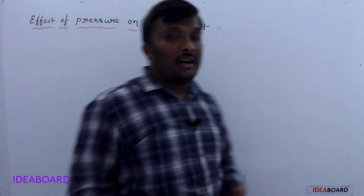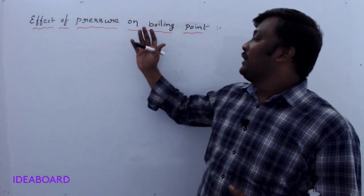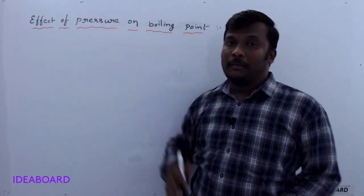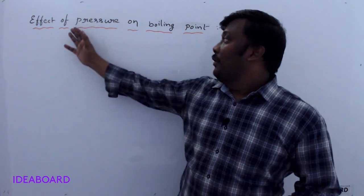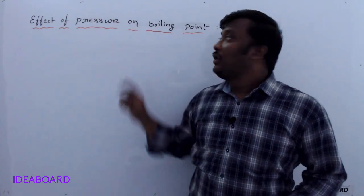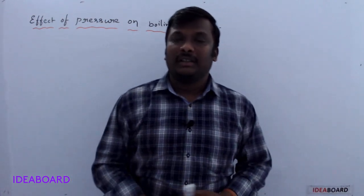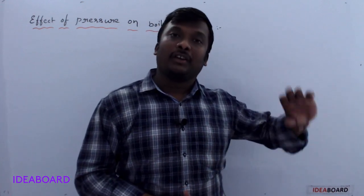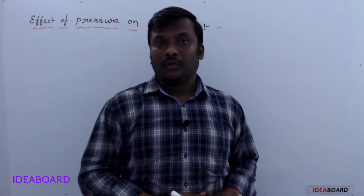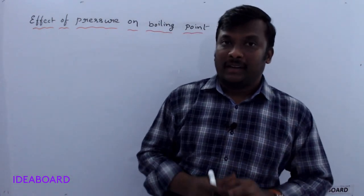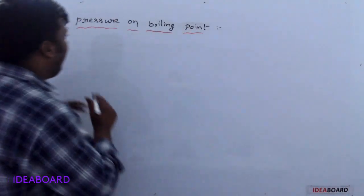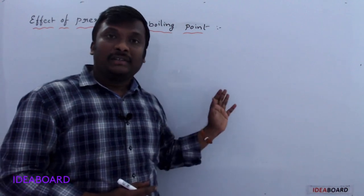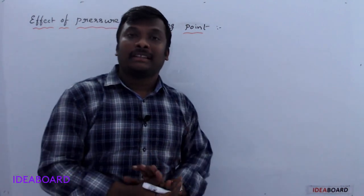Now let us look at the effect of pressure on boiling point. What is boiling point? The temperature at which a substance changes its phase from liquid to vapor or gas. Boiling point and condensation take place at a particular temperature — vaporization and condensation occur at that particular temperature.